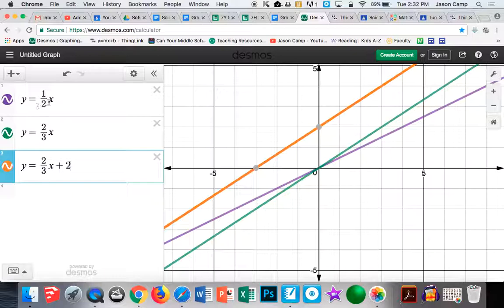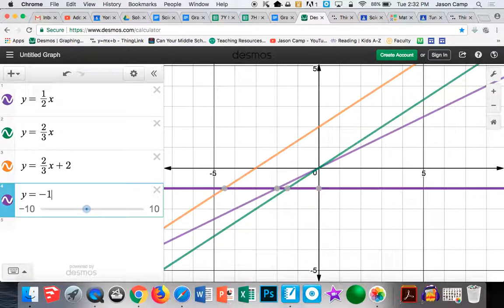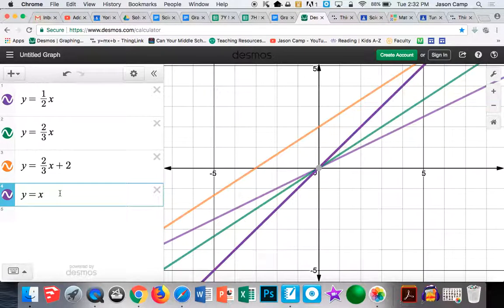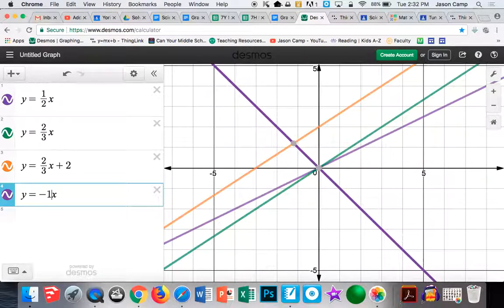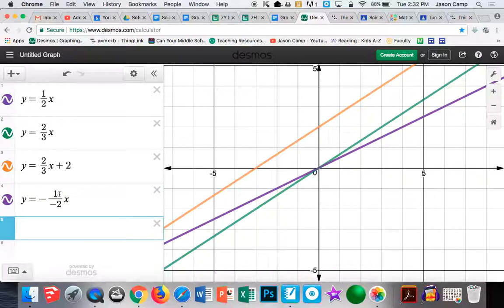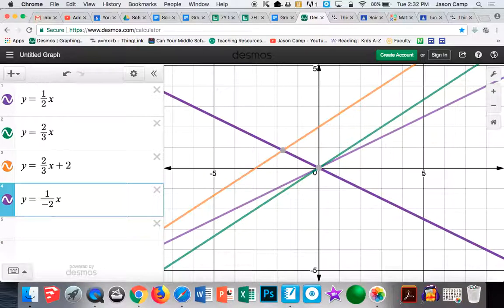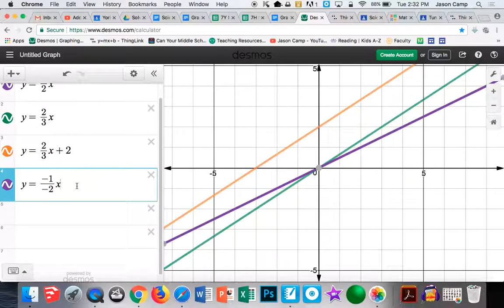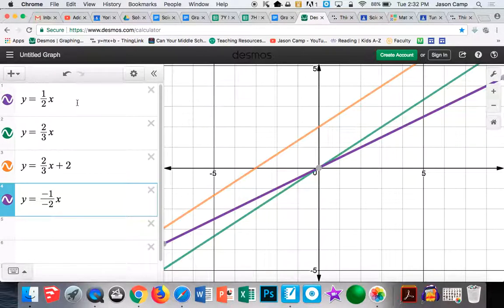It's also interesting. Showing this 1 half x, sort of a proof that a negative divided by a negative is equivalent to a positive divided by a positive. I can go y equals negative, oops, negative, oops, negative 1, oh hang on, this isn't working for me, x. Hang on. Negative 1, negative 2. There we go. So this one and this one are identical. They both run on the exact same path.